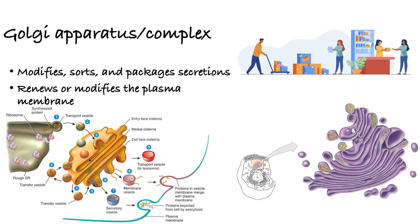So we're going to talk about the Golgi apparatus, also called the Golgi complex. This reminds me of the postal service — commercial shipping, packaging, sorting, modifying. This is basically what the Golgi apparatus does. It modifies, sorts, and packages secretions coming from the endoplasmic reticulum, whether from the smooth ER or the rough ER, and it also renews or modifies the plasma membrane. The endoplasmic reticulum is so unique in that it has a receiving part called the cis face and a shipping part, which is so interesting. And you can always recognize it because it has a stack of flattened sack-like structures.